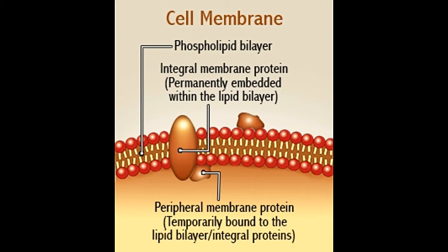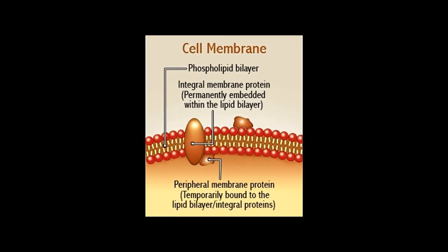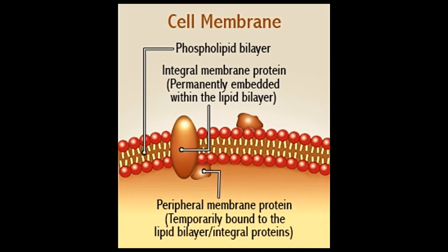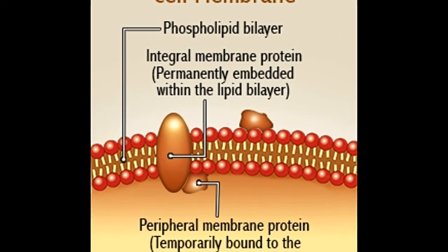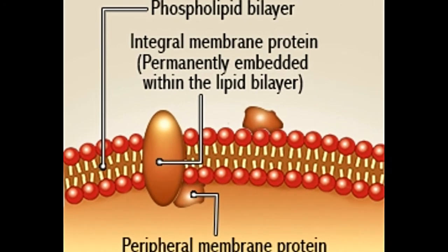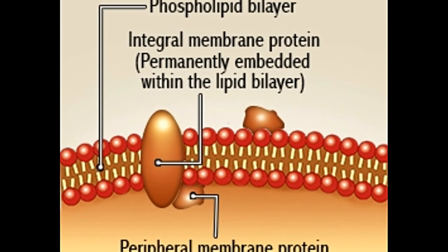As per the fluid mosaic model, the plasma membrane comprises a lipid bilayer in which several proteins are embedded. The fluidity of the lipid bilayer facilitates the movement of the proteins within the bilayer.